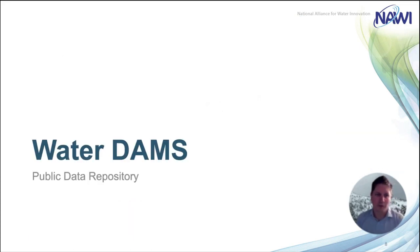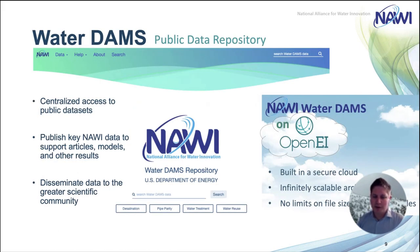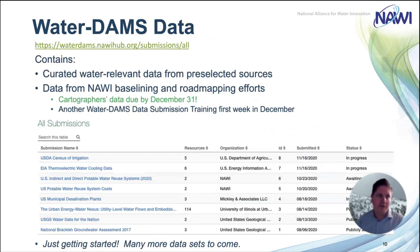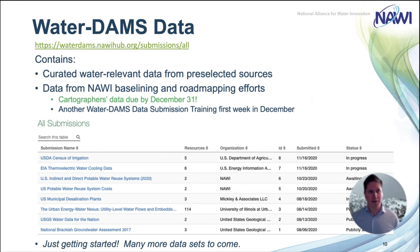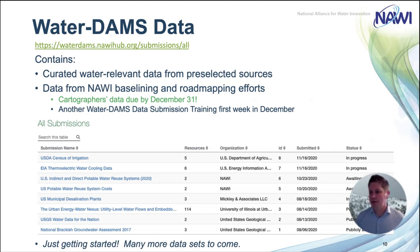On to Water DAMS, what we're really here for. Water DAMS is our public data dissemination portal — centralized access to public data sets. That's where we're going to publish our key NAWI data, models, and get them out to the world. You can go to waterdams.nawihub.org to find the data very easily, and we already have some curated water-relevant data from a few preselected sources. We're going to be putting all of our cartographers' data into Water DAMS this month. We're just getting started populating the data in Water DAMS — there's a lot more data to come, this is just the beginning.